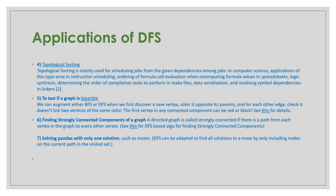Resolving symbol dependencies in linkers is another application. To test if a graph is bipartite, we can use either BFS or DFS. When we first discover a new vertex, color it the opposite of its parent. For each other edge, check that it doesn't link two vertices of the same color. The first vertex in any connected component can be red or black. You can see more details on GeeksforGeeks or online.